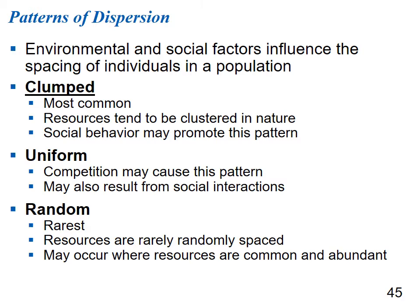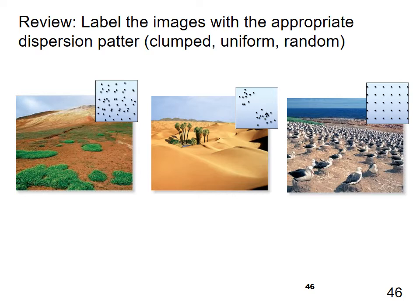Let's label the images with the appropriate dispersion pattern. The third picture — nesting seabirds — is uniform dispersion, though zoomed out they'd appear clumped on the coast. Dispersion patterns are general descriptors, not perfect categories. The first picture is random and the second picture is clumped — so it goes random, clumped, uniform.